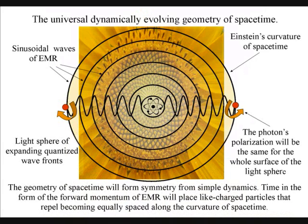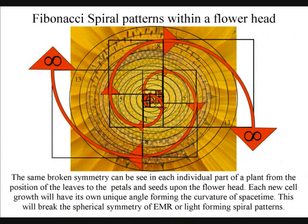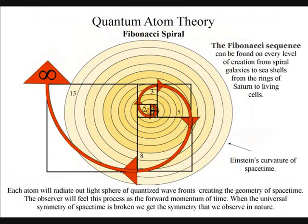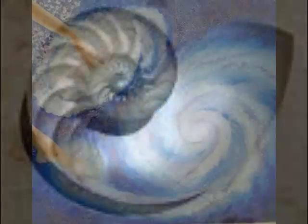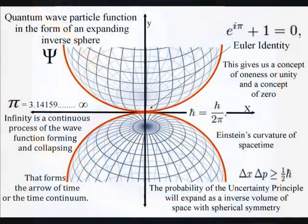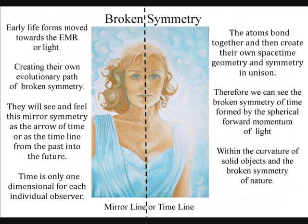The same patterns, can be seen in seashells, and spiral galaxies, and throughout nature, because the same process, governs the evolution of life. Early life forms, move towards the light, forming imperfections, of their own broken symmetry.